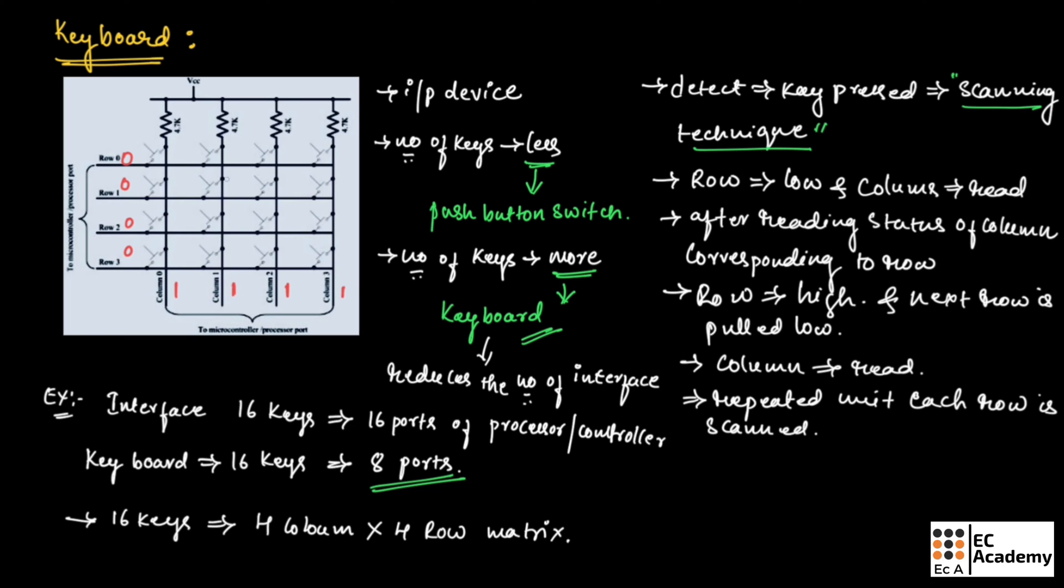Now let us say this key is pressed. Since this key is pressed, on this column line we are having 1 and on this row line we are having 0. Correspondingly, this column, which is column number 1, will become 0 because these two lines are shorted.